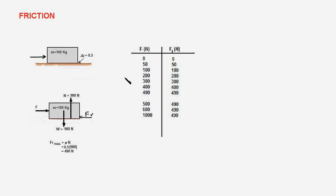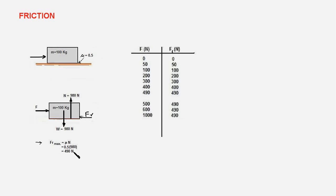But this process cannot go on forever. The frictional force has a limit decided by the equation: FR_max = μ × N. Here μ is 0.5 and N is 980 Newtons, so the maximum frictional force works out to 490 Newtons.